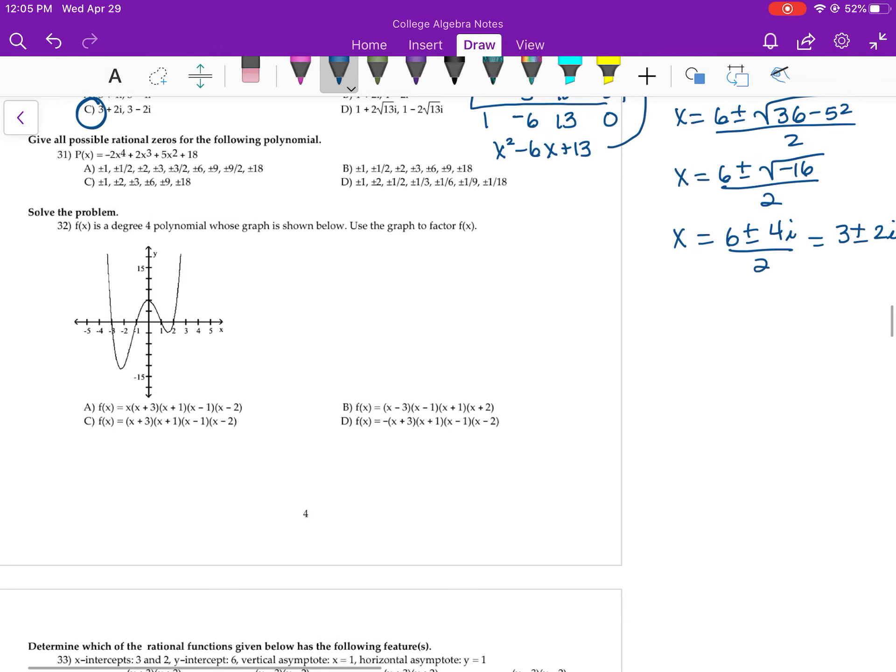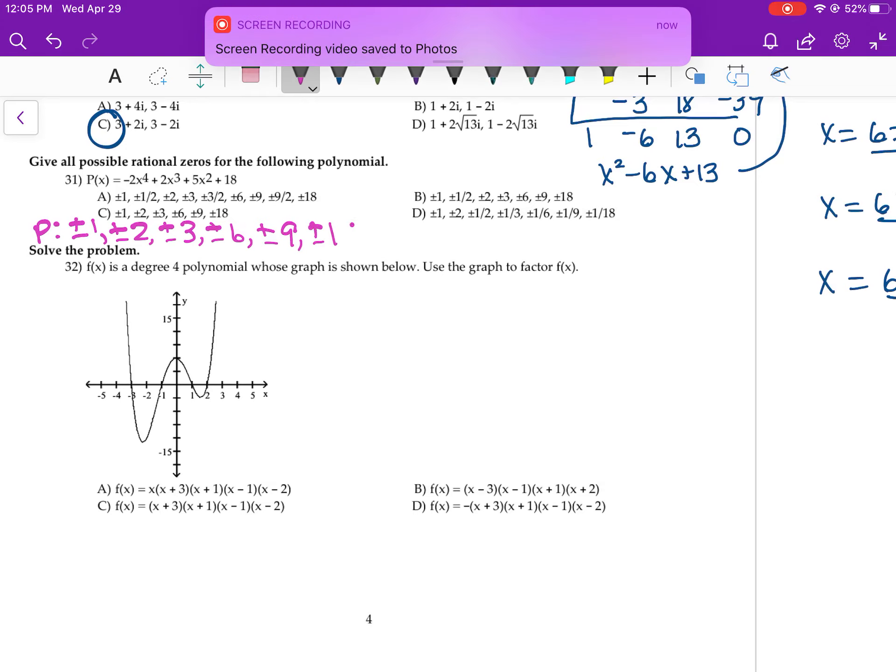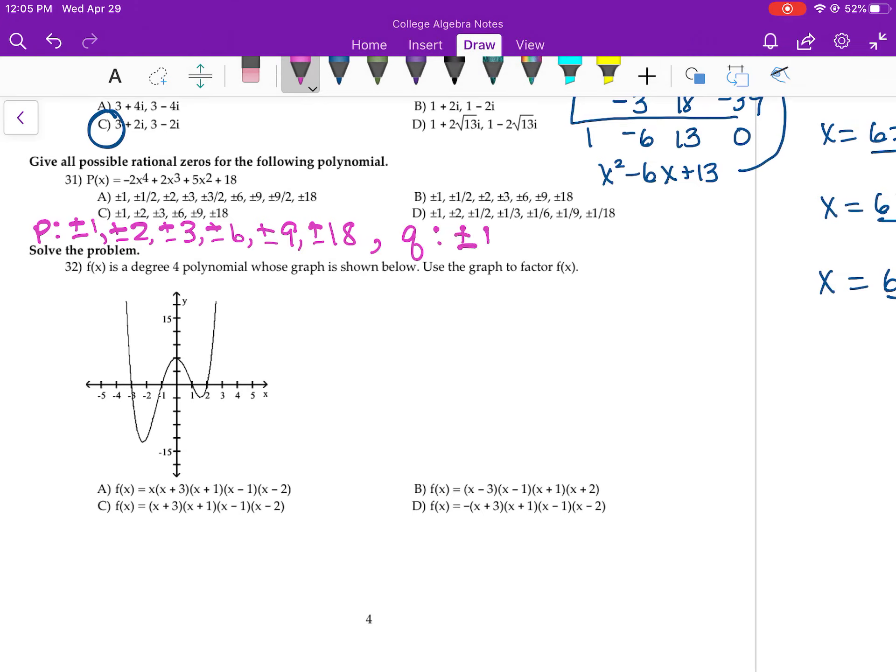Okay, number 31. They're asking you for P over Q. P is 18. Its factors are 1, 2, 3, 6, 9, and 18. My Q is 2. So you're going to take every P value and divide it by every Q value. And the answer to 31 should be A.